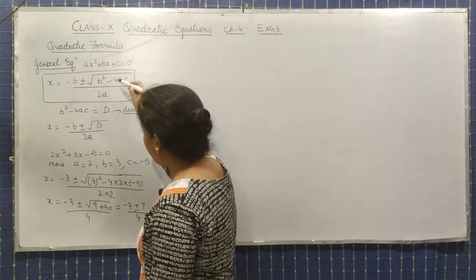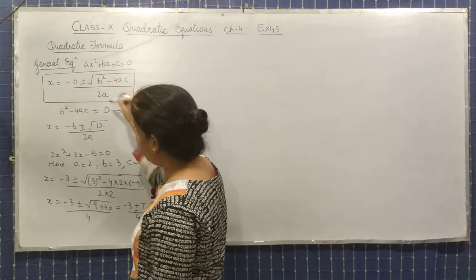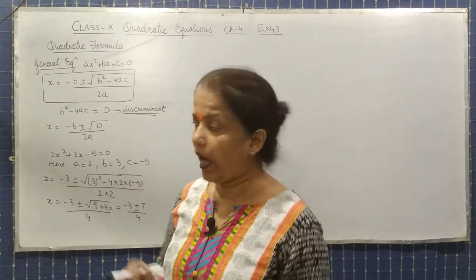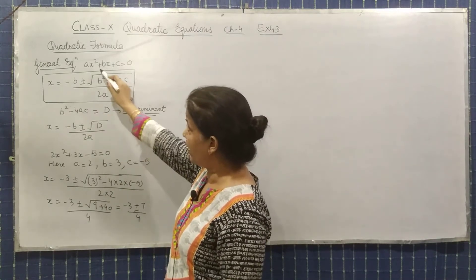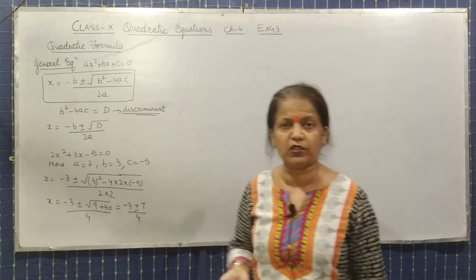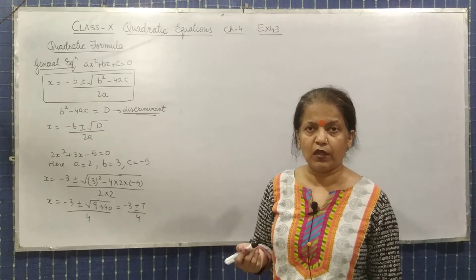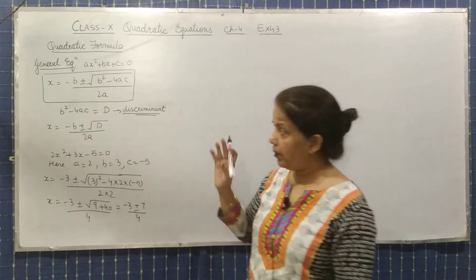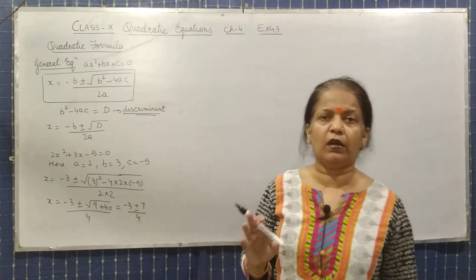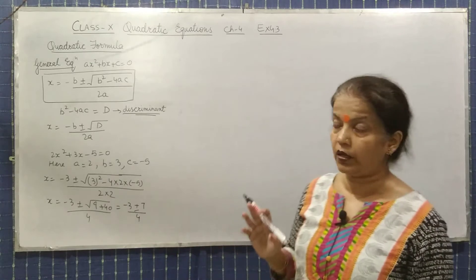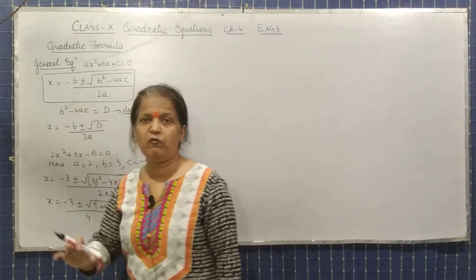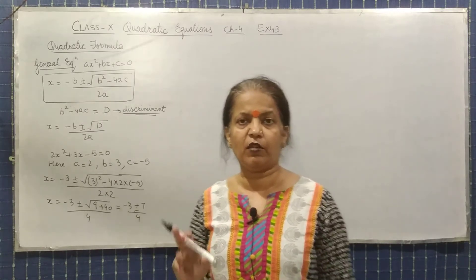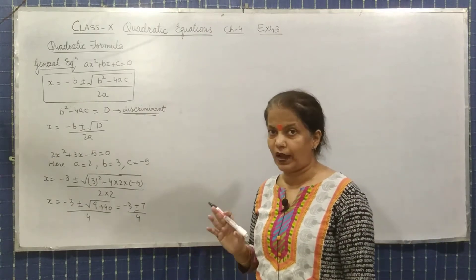If the value of the discriminant is positive or zero, then only can you find out the value of x. But if D = b² − 4ac comes out to be negative, then you cannot find the square root of a negative number. That you will study in 11th class. So if the discriminant is negative, it means the roots are not possible — the value of x does not exist in that situation.